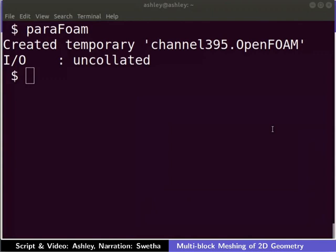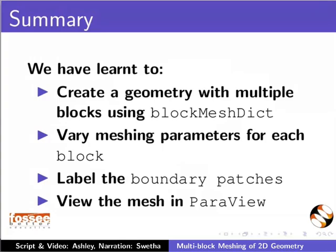With this, we have come to the end of the tutorial. To summarize, in this tutorial, we have learnt to create a geometry with multiple blocks using blockMeshDict, vary meshing parameters for each block, label the boundary patches, and view the mesh in Paraview.